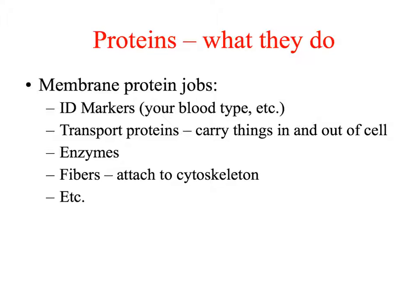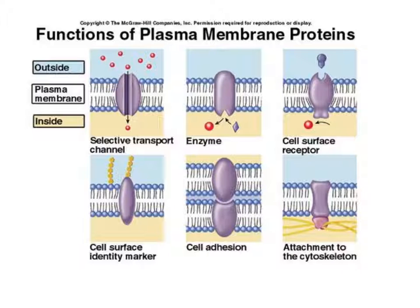Enzymes reduce the time for reactions to occur inside cells. Fibers attached to the cytoskeleton are also present. Proteins are one of the four major macromolecules and play an essential role in the cell membrane. This slide gives more information about other roles of cell membrane proteins — light blue represents outside the cell, yellow represents inside — and these function in different situations.